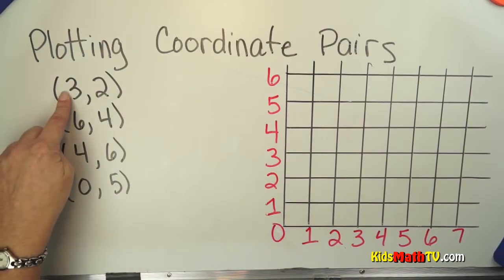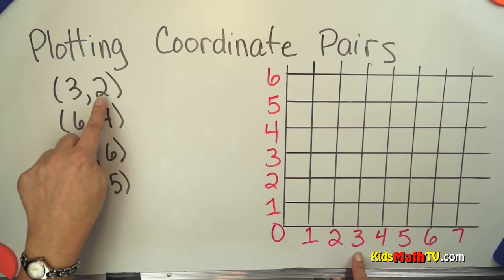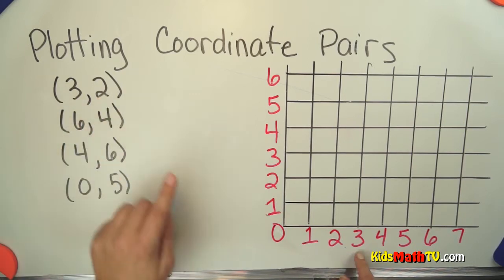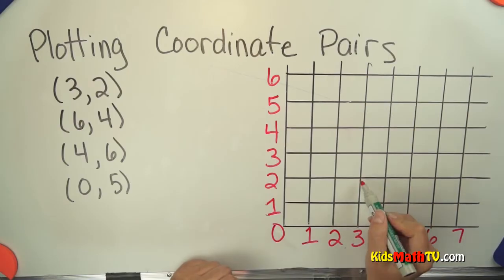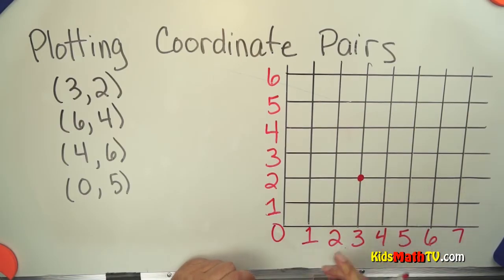So we simply look at our first number, which is three — we go to the three on the x-axis. And this is the two, so we go up two. Three is our first number across, then up to two. So we got in the third elevator and went to the second floor.